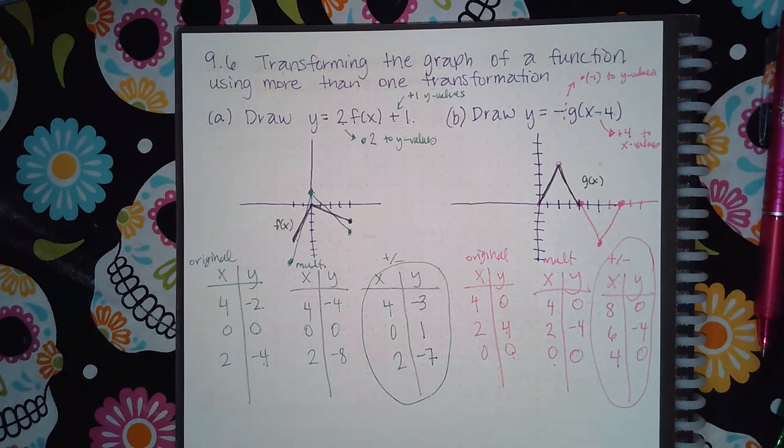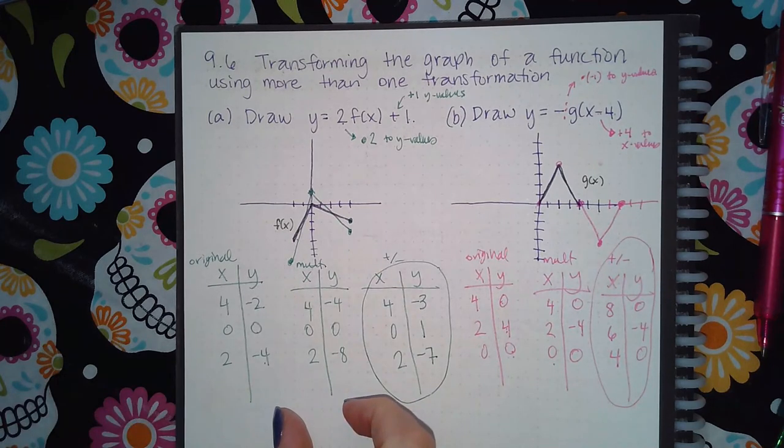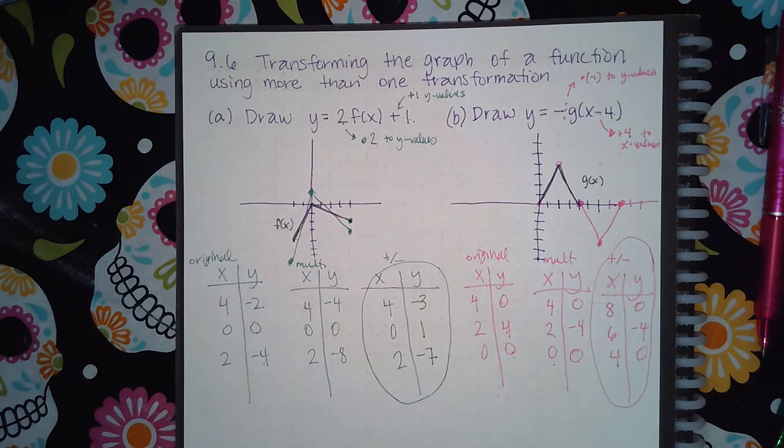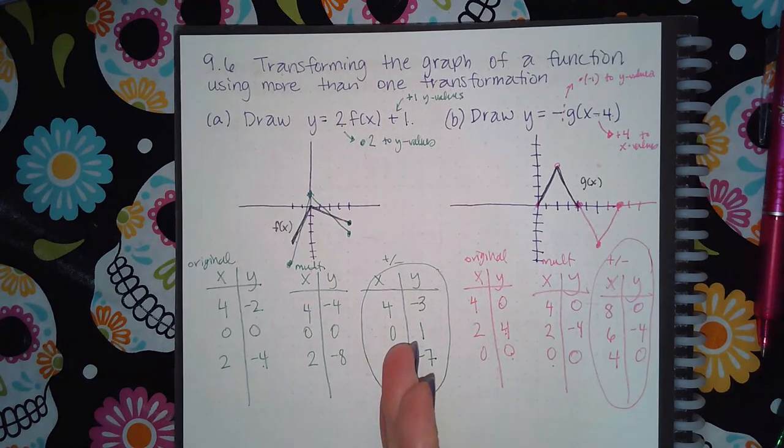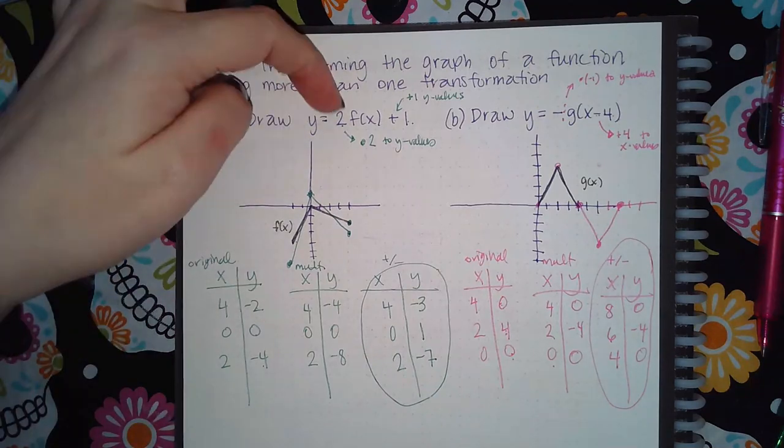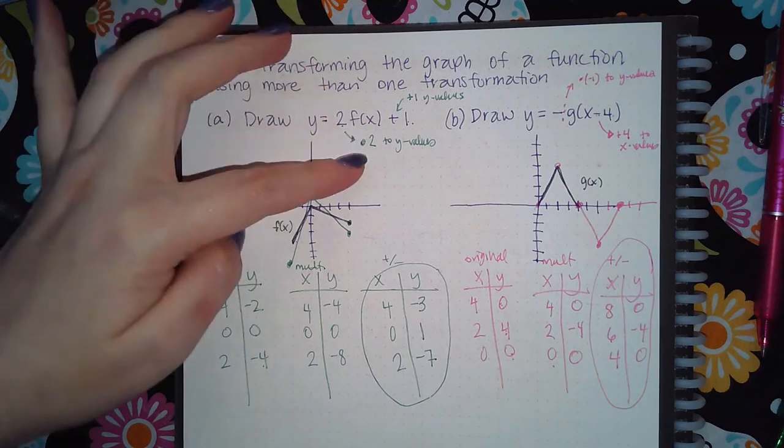So take it one step at a time. But always do the multiplication factor first, whether it be out here or inside. And then deal with the addition or subtraction later. But keep that same logic. Whatever's happening on the outside happens to the y values, and it happens exactly as it is.